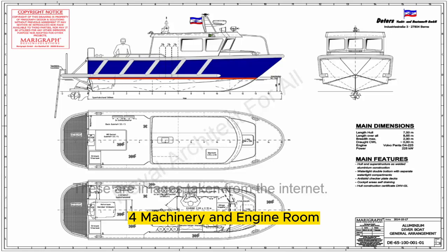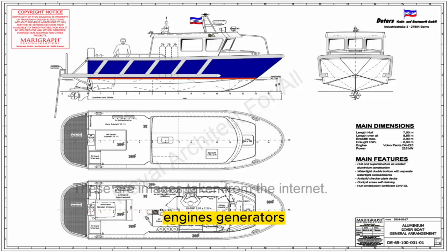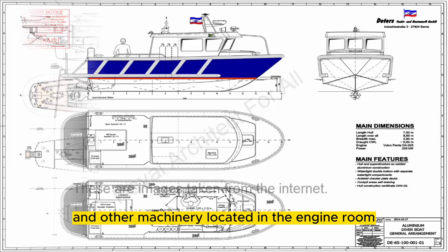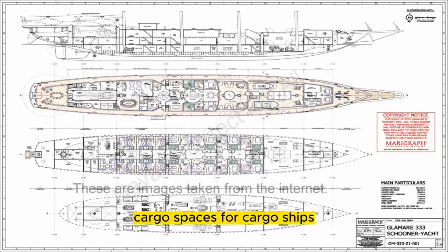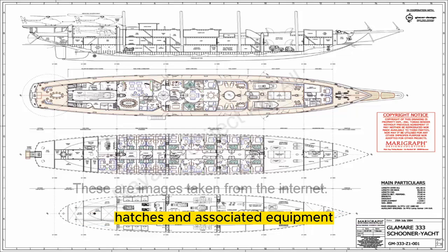4. Machinery and Engine Room: Details about the arrangement of the ship's main propulsion systems, engines, generators, and other machinery located in the engine room. 5. Cargo Spaces: For cargo ships, the plan outlines the arrangement of cargo holds, hatches, and associated equipment.